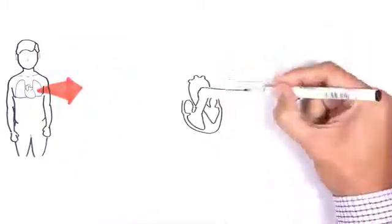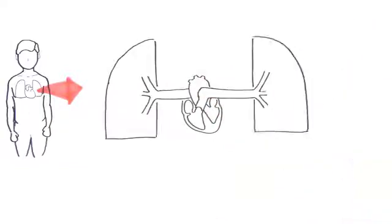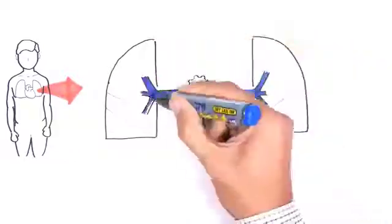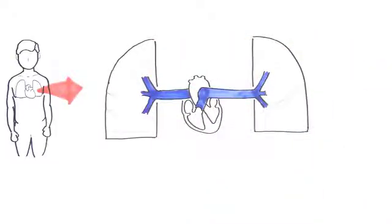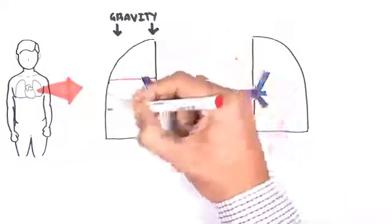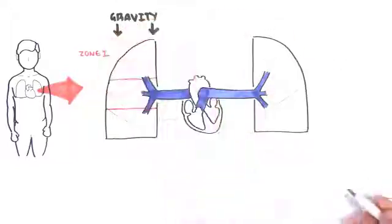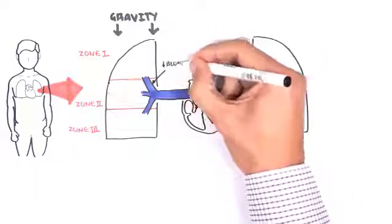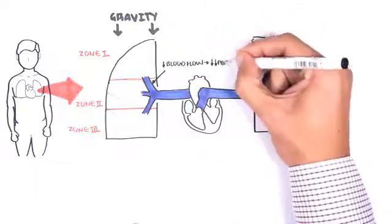Here we have two lungs. The heart pumps deoxygenated blood through the pulmonary artery into the lungs. In the upright position, the upper portion of the lungs is well above the level of the heart, and the base of the lungs is at or below it. This has important implications on both perfusion and ventilation, because gravity will affect how much blood goes to different areas of the lungs. As you can imagine, blood traveling to the apex will be decreased because of gravity — there is decreased perfusion at the apex.